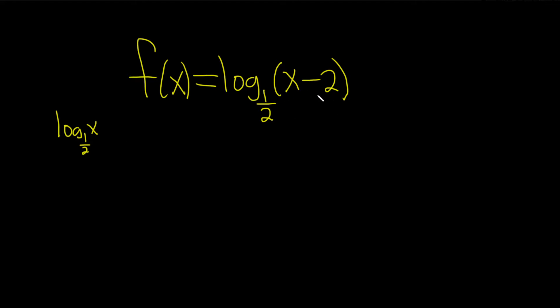And then because we're subtracting 2 from the x, we're going to take this graph and just go right by 2. Remember, when you subtract the number from the x, you go right. If you add a number to the x, you go left. So what does this graph look like?